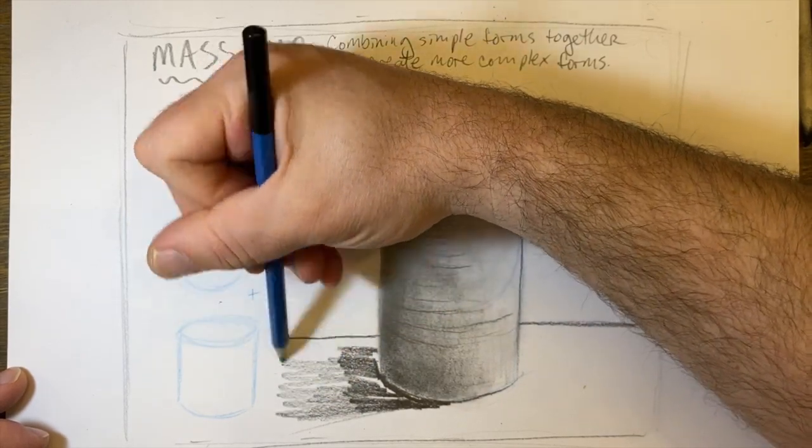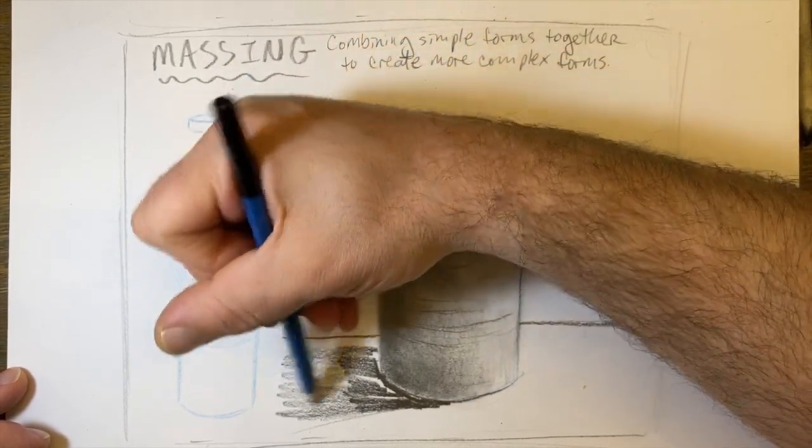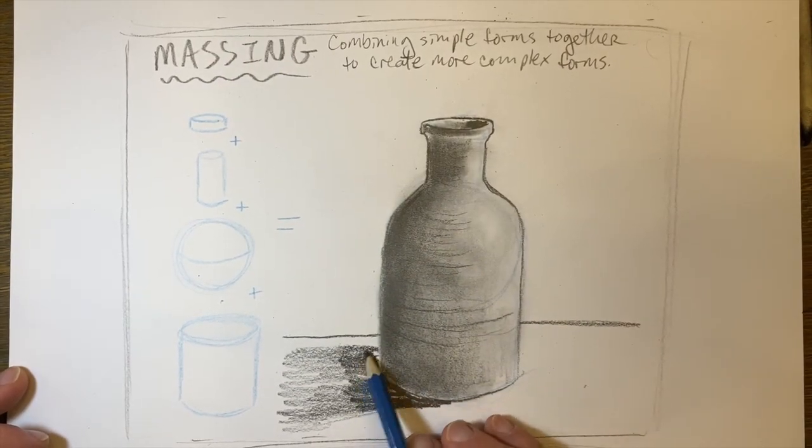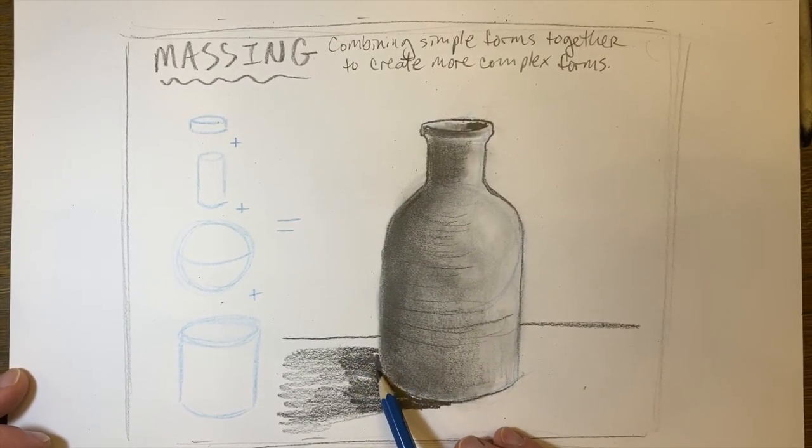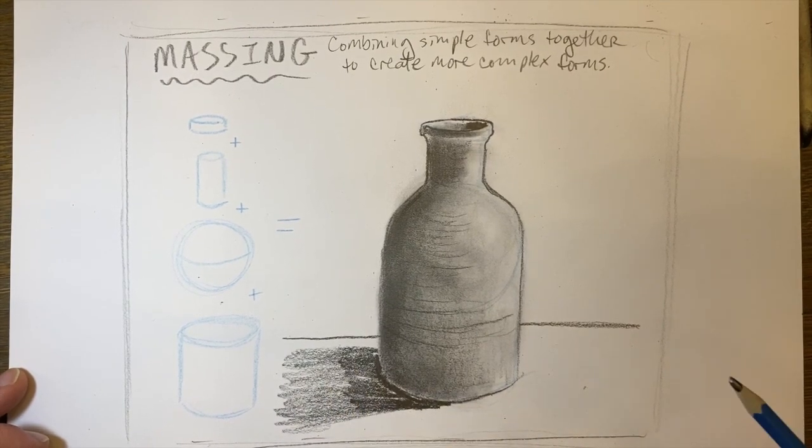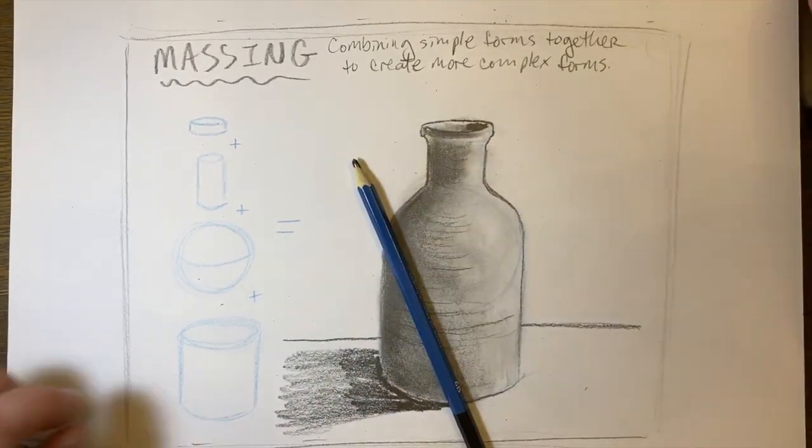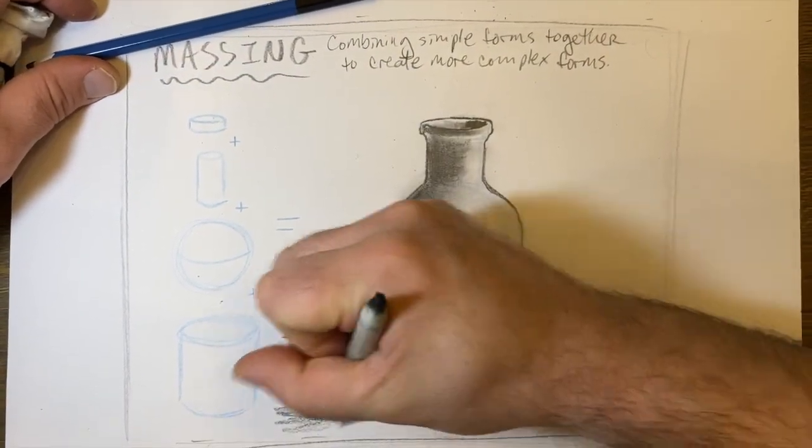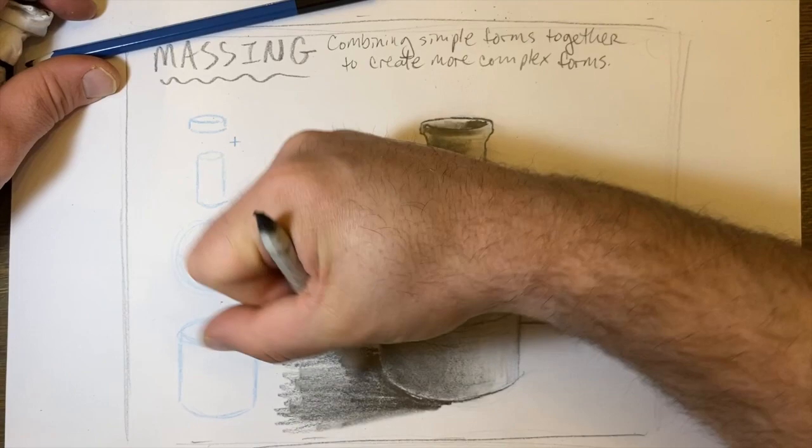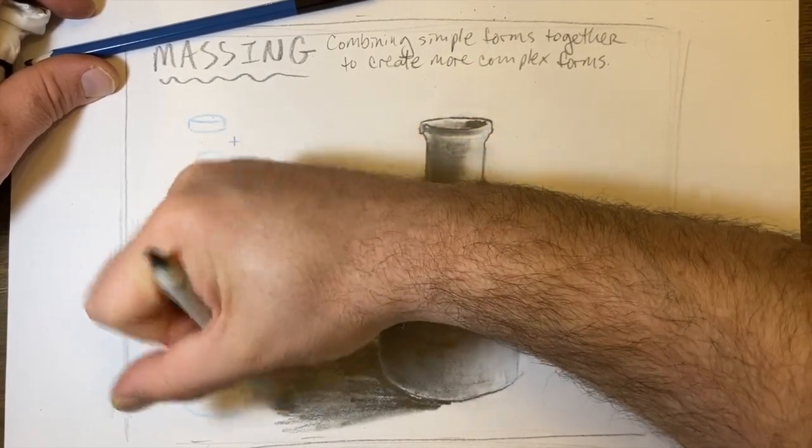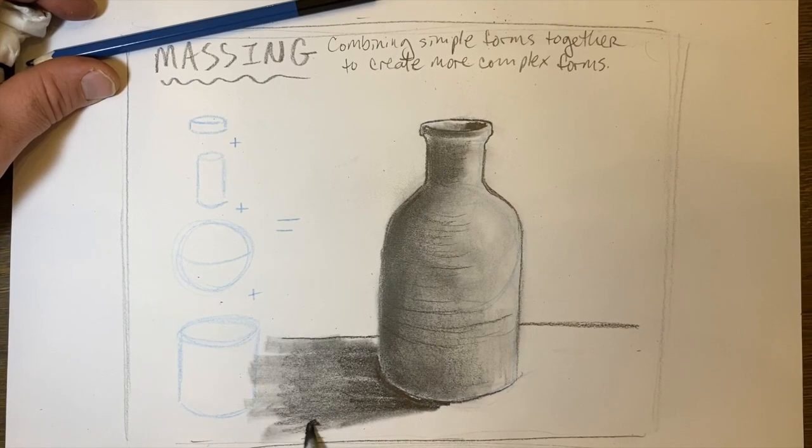Notice how the cast shadow is darkest where it meets the object, so I'm blocking that in, pressing harder with the 6B pencil and blending it out. Here I'll use my blending stick or a newspaper towel to really get in there, and I'm blending it out using the side of the top part of the blending stick.